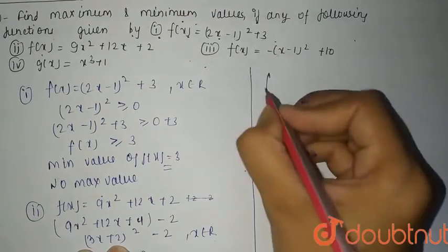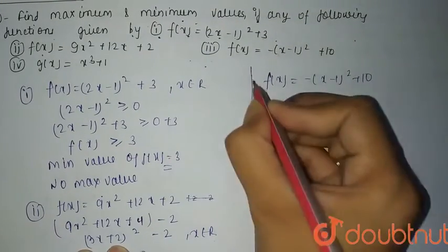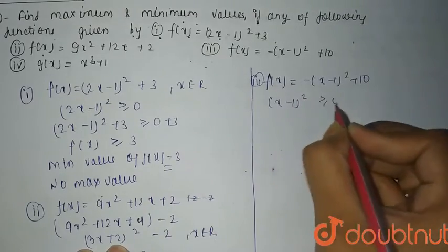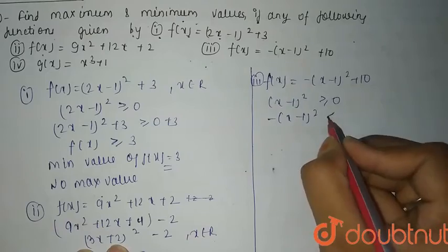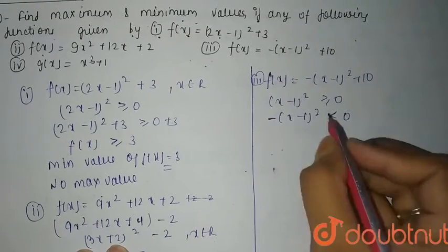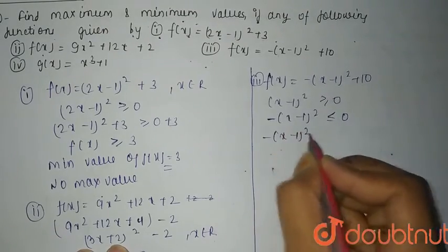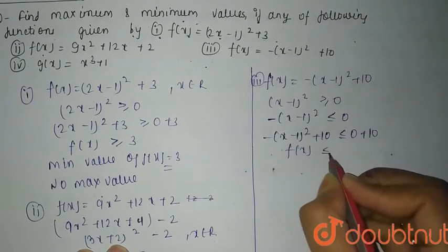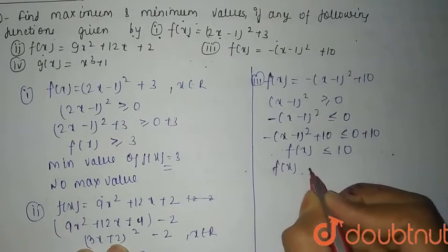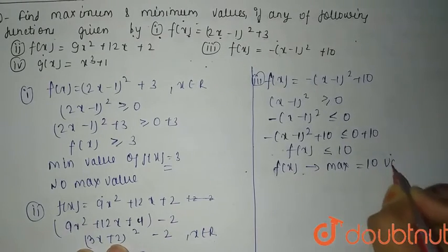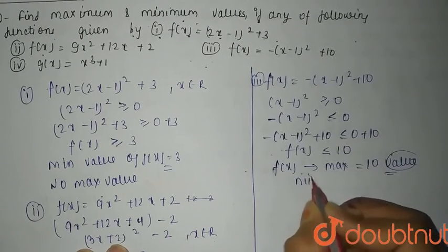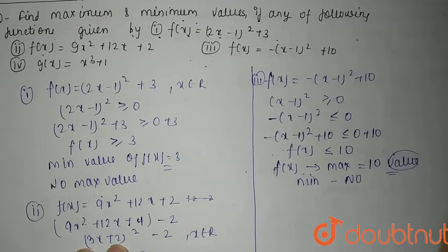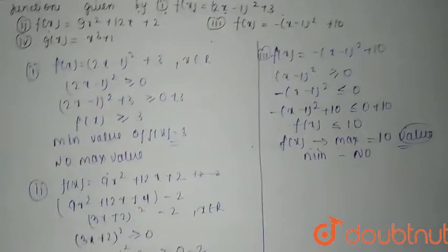The third function is f(x) = -(x - 1)² + 10. For each x belonging to R, (x - 1)² is greater than or equal to 0. Then -(x - 1)² is always less than or equal to 0 because of the negative sign. Adding 10 to both sides, f(x) = -(x - 1)² + 10 is always less than or equal to 10. So f(x) has a maximum value of 10 and no minimum value, because it goes to negative infinity.